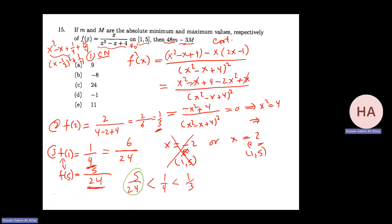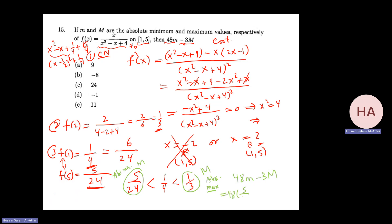The absolute minimum small m is 5/24 and the absolute maximum capital M is 1/3. So 48 times small m minus 3 times capital M equals 48 times (5/24) minus 3 times (1/3) equals 10 minus 1 equals 9.